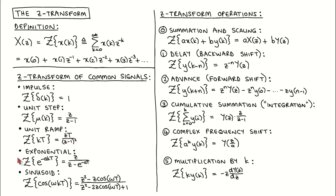The Z-Transform of an exponential signal, where the signal values are given by the exponential function of minus constant A times time index K times sampling period T, is equal to Z divided by Z minus e to the power minus A T. The Z-Transform of a sinusoidal function described as the cosine of constant omega times the time index K times sampling period T, is equal to Z squared minus Z times cos of omega T, divided by Z squared minus 2 times Z times cos of omega T plus 1.